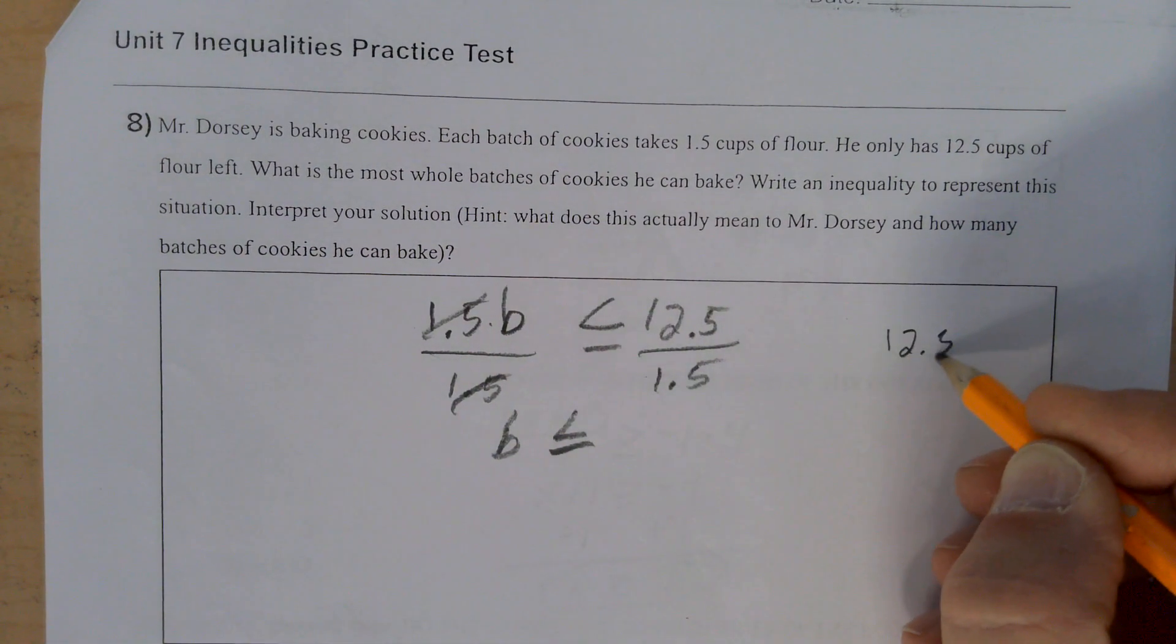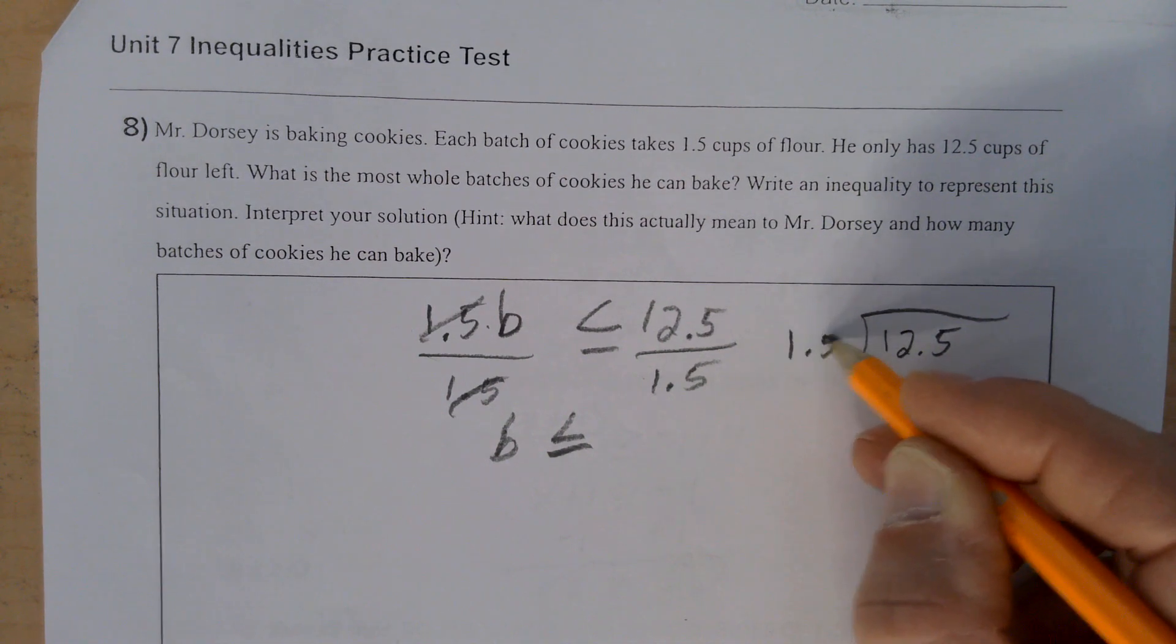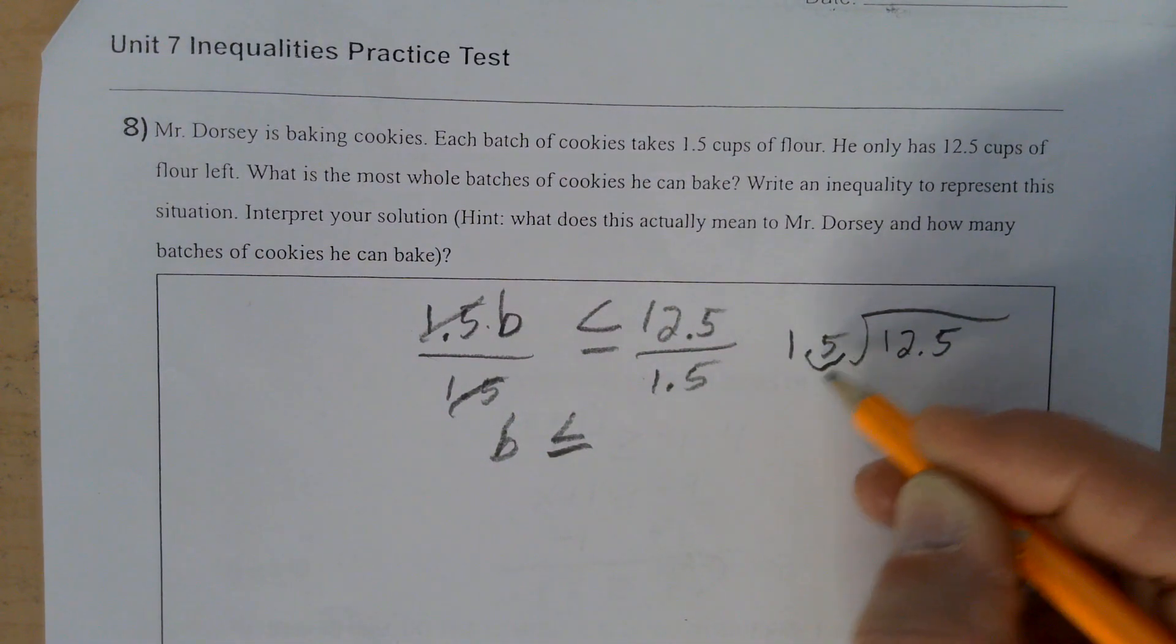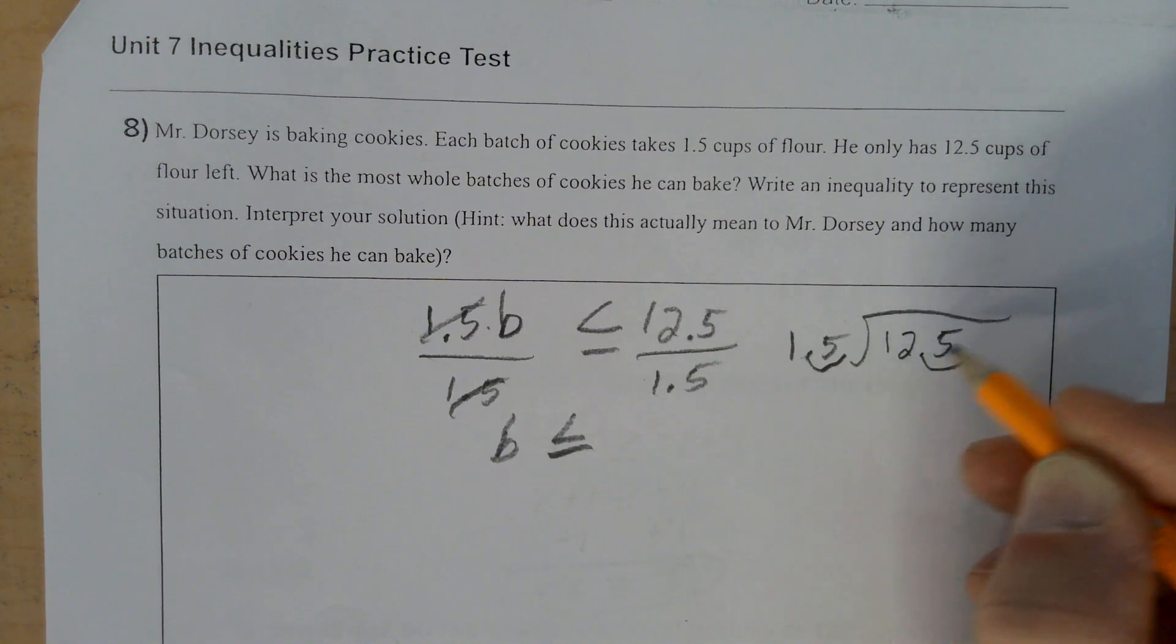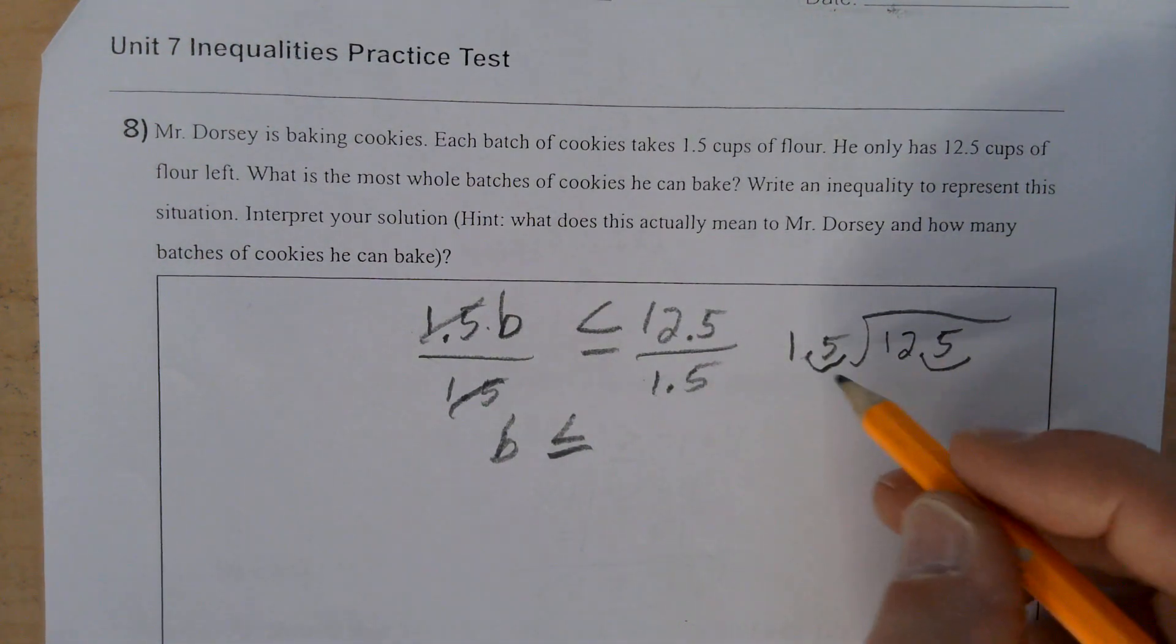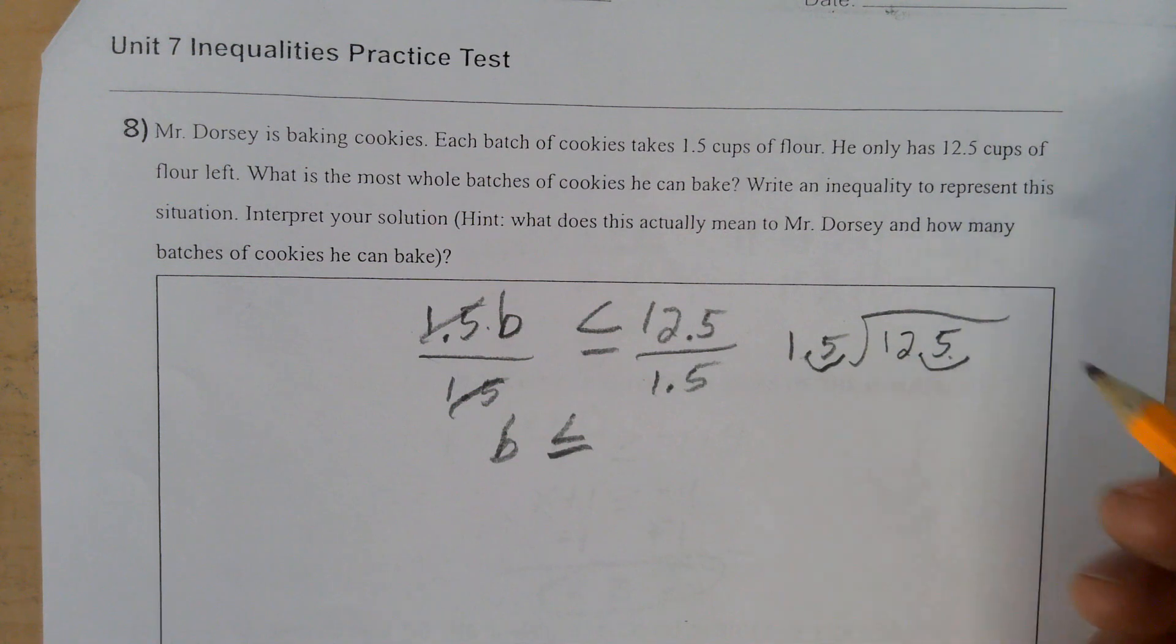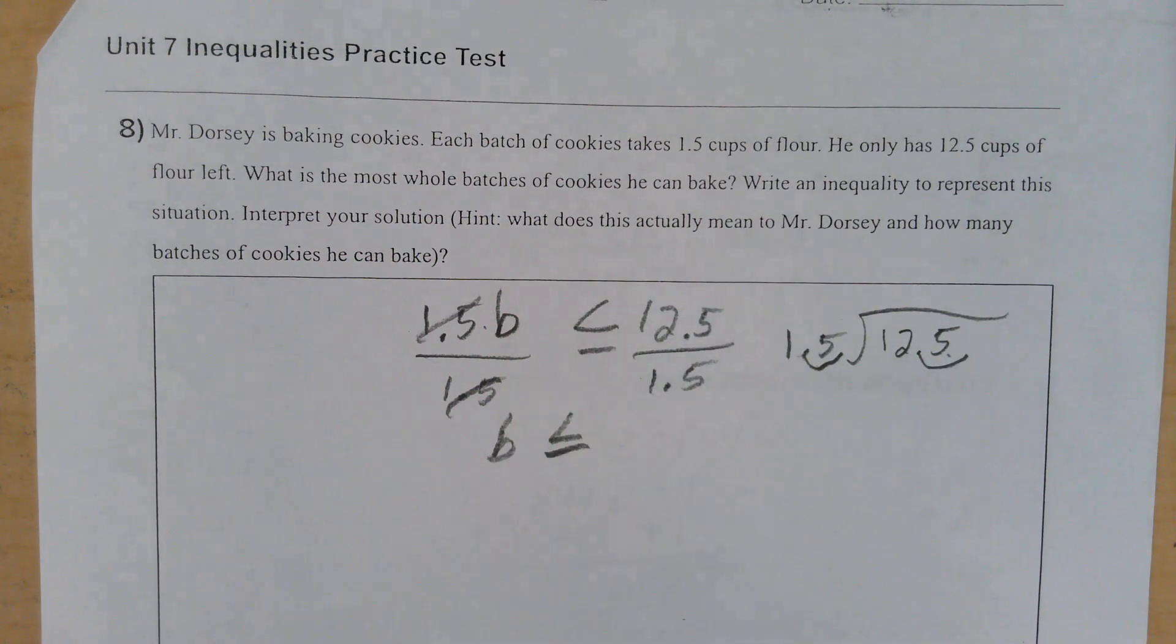So let's do that. Whenever you're dividing decimals here on the outside, you have to make sure it's a whole number. So you move the decimal place one to the right to make it a whole number, and what you do to the number inside, you must do to the outside. So we move both decimal places.